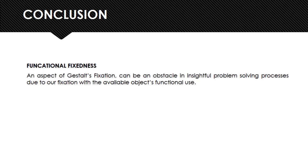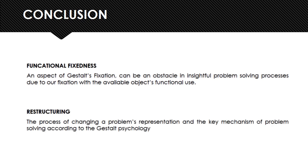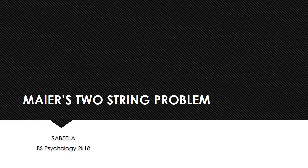In conclusion, Maier successfully demonstrated in this experiment the concept and role of functional fixedness — an aspect of Gestalt's fixation — and how it can serve as an obstacle in insightful problem-solving due to our fixation on an object's conventional functional use. He also established the basis for the important concept of restructuring, which is the process of changing a problem's representation and is the key mechanism of problem-solving according to Gestalt psychology. And with that, I'll conclude my presentation on Maier's two-string problem of 1931. Thank you very much for watching.